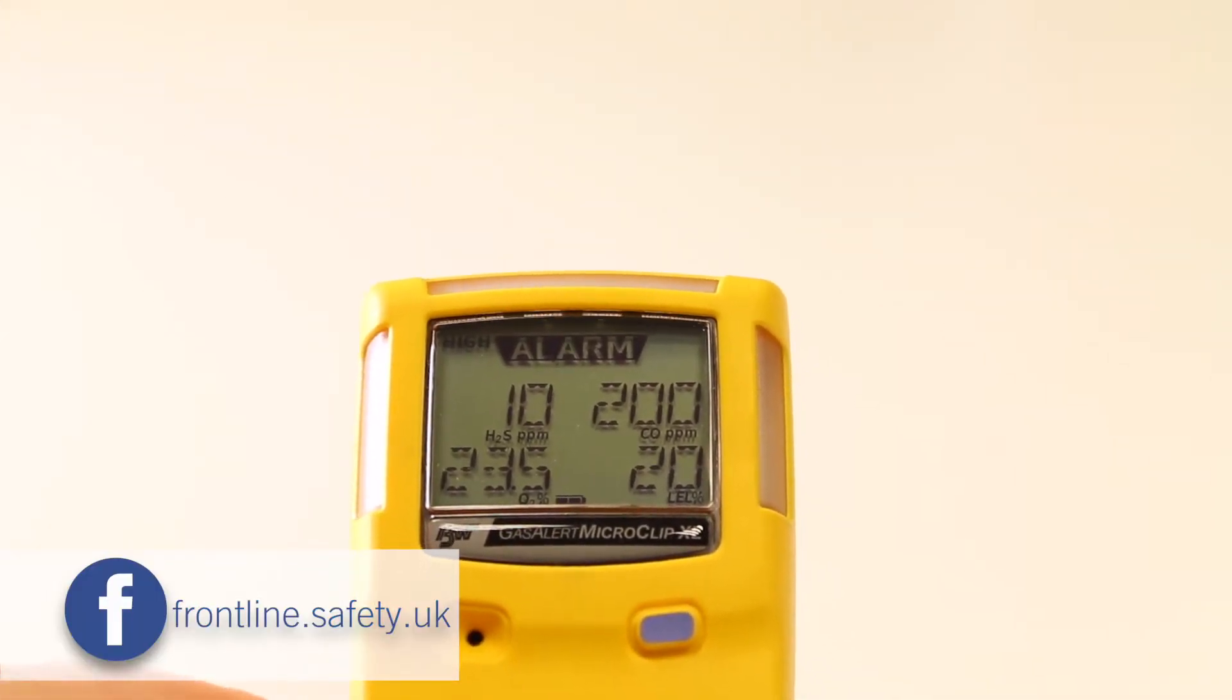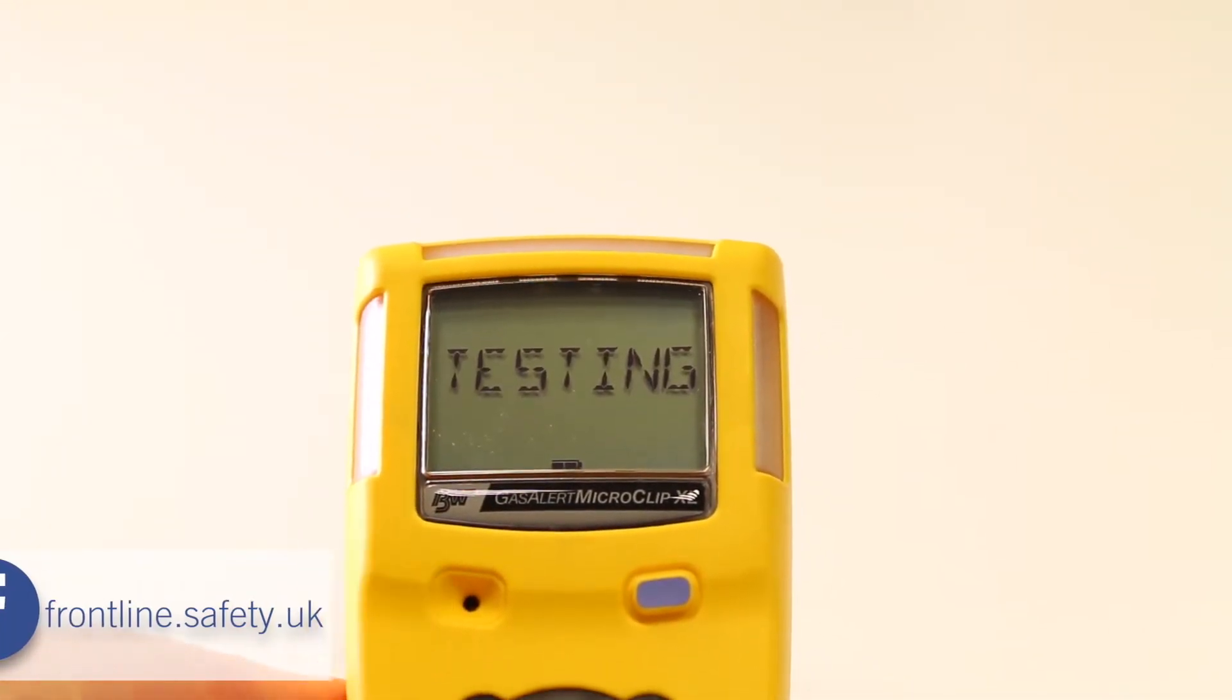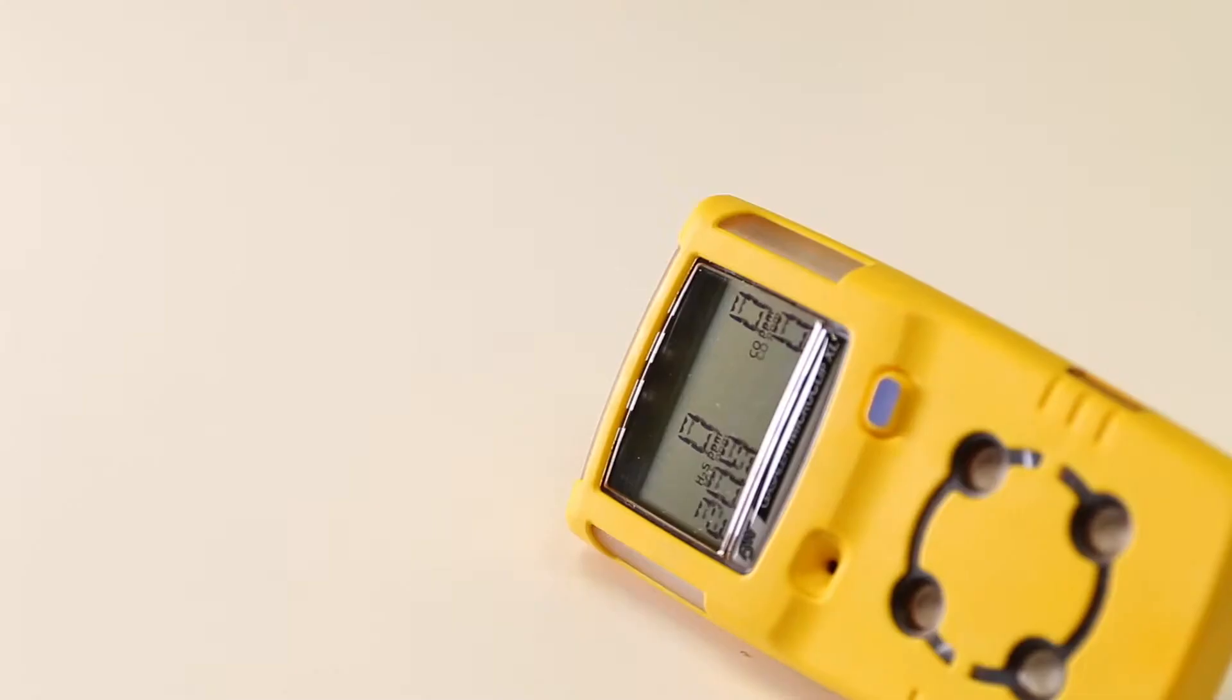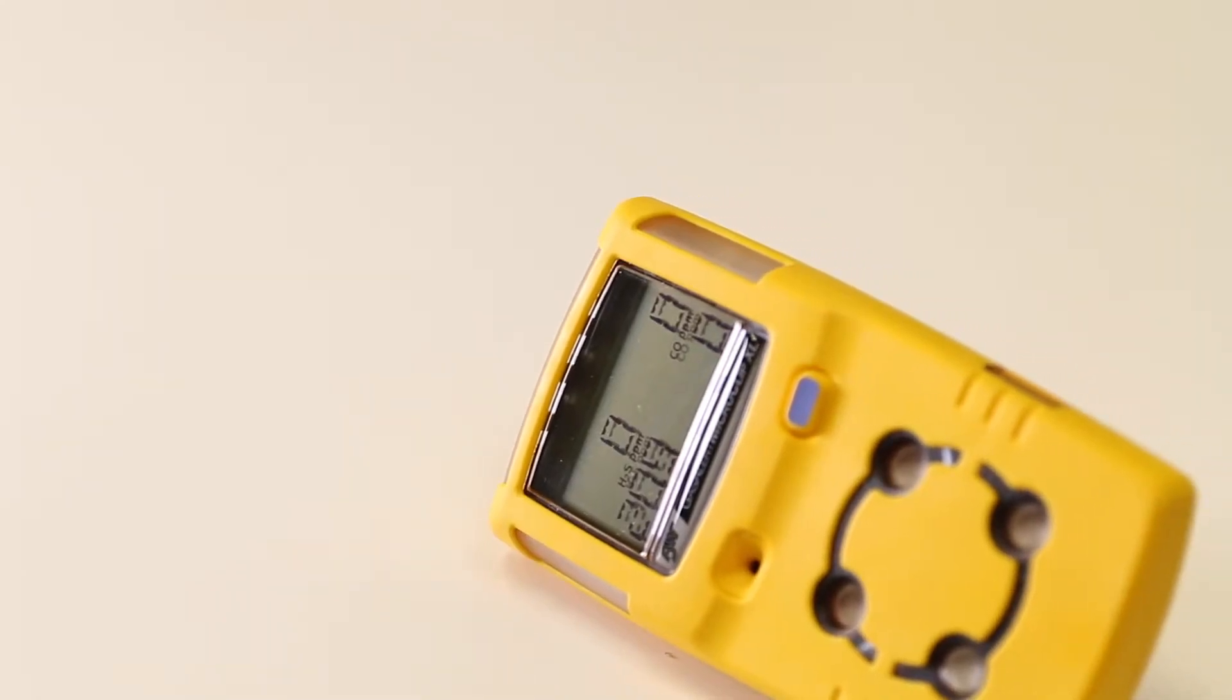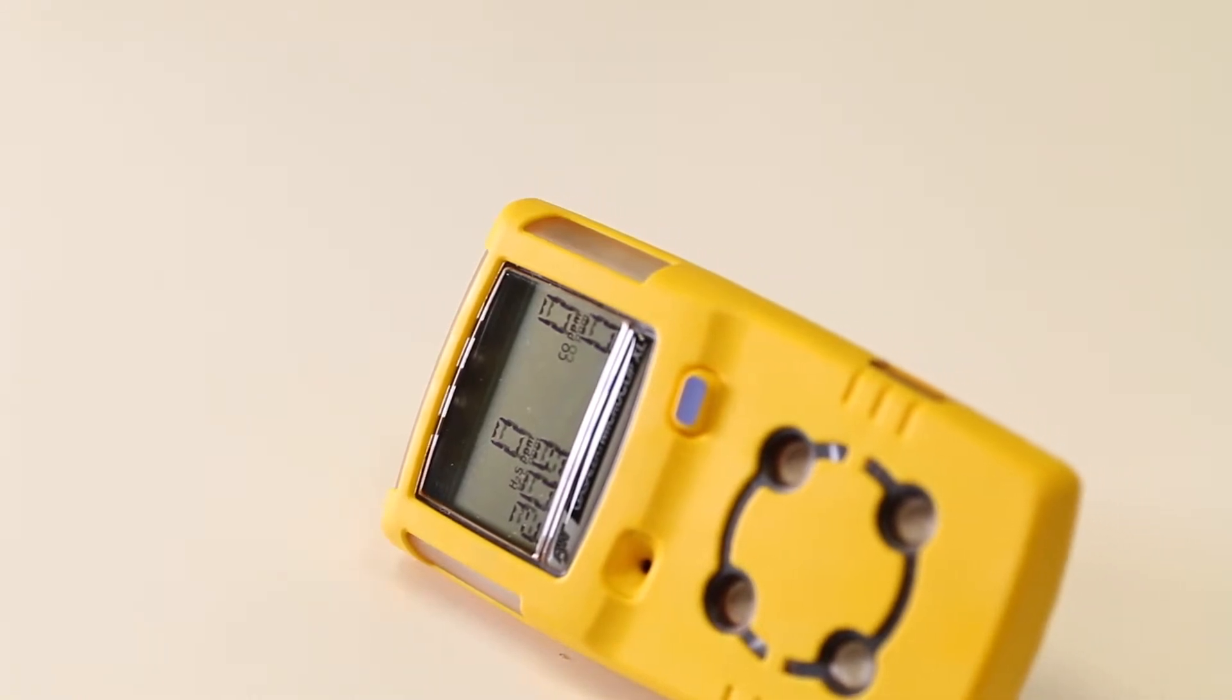Once you've switched the MicroClip XL on, it will complete a self-check and after this has been completed, it will then sit in a standard measurement mode.